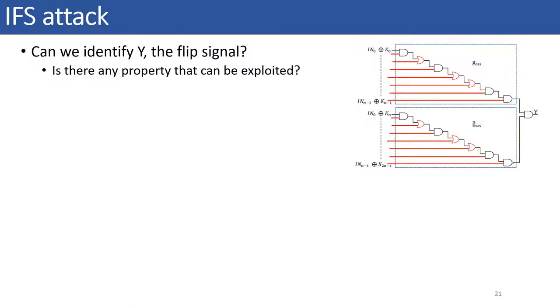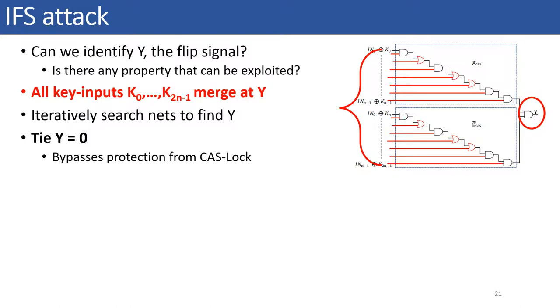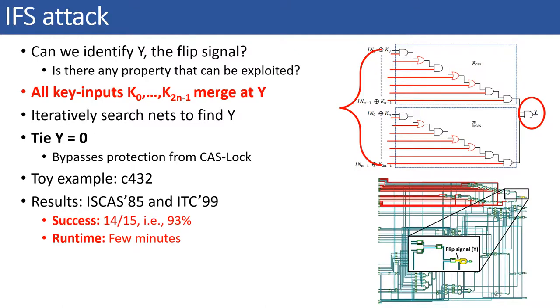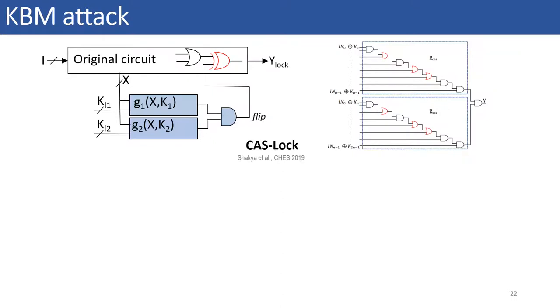We first discuss about the proposed IFS attack on the CASLOCK defense. In ANTI-SAT, the G and G-bar blocks comprise an AND-tree which is a point function structure. However, in CASLOCK, a cascade of AND or gates forms the G and G-bar blocks. It is nothing but a diversified point function. To successfully launch the IFS attack, we first need to identify the flip signal Y and its value. We trace all the key inputs in their point of conversions to obtain the flip signal. Next, using an oracle, we identify the value of this flip signal. For this case, it is logic zero. And setting this signal Y to logic zero bypasses the CASLOCK protection to obtain the original design. This is a toy example of one ISCAS-85 benchmark, C432. We observed success on 14 out of 15 circuits from ISCAS-85 and ITC-99 benchmarks. Since this is a circuit recovery attack, we cannot recover the secret key using it.